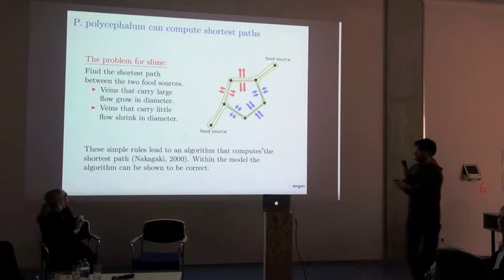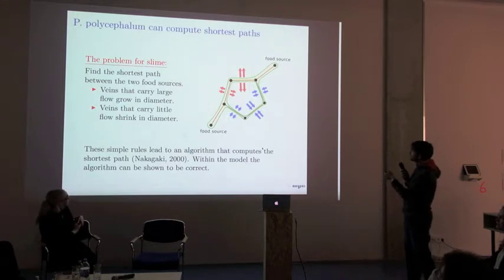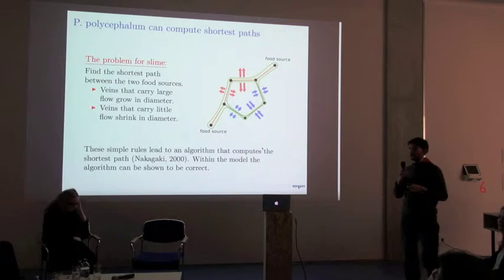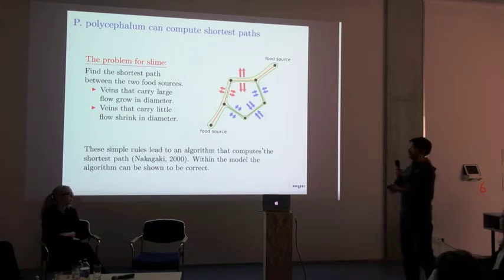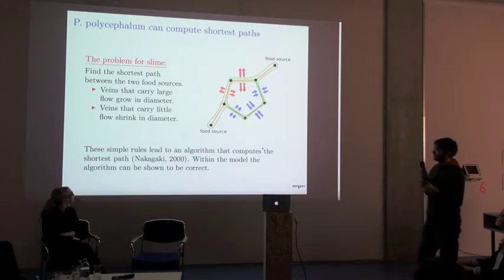What we have seen here is the shortest path problem, now in a different context with a different organism. We have seen two food sources, a shorter path and some other longer paths. The longer path kind of shrinks, and the shortest path gets reinforced. This is the same positive reinforcement mechanism — the ants are using this path, so we put more pheromone on it, so more ants use it. And here it's also the same: there's a lot of flow in the pipe, so we make the pipe bigger, which causes even more flow to go through the pipe.